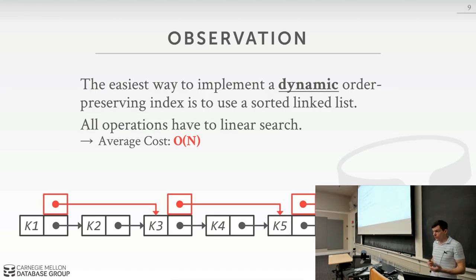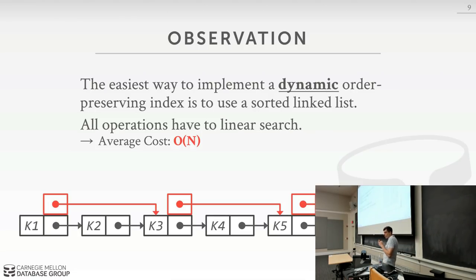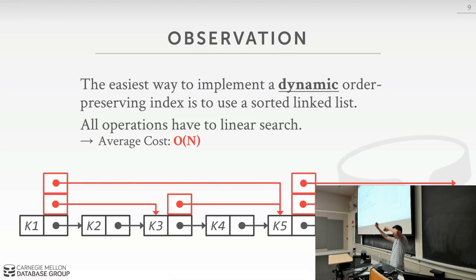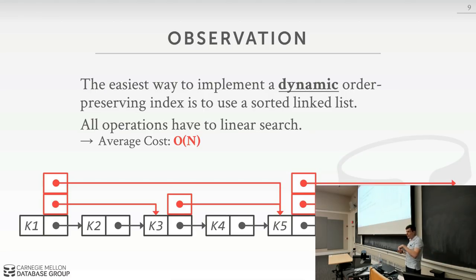At a high level, this is what a skip list is - essentially multiple levels of linked lists with extra pointers that skip over intermediate nodes. When you see the diagram, it looks a lot like a B plus tree, but we don't have to do any rebalancing whenever we do an insert or delete. With a linked list, we don't have to do splits and merges - we just update the pointer of the predecessor to now point to us.